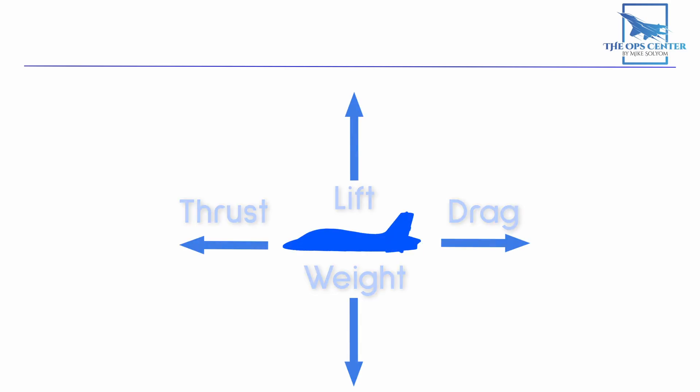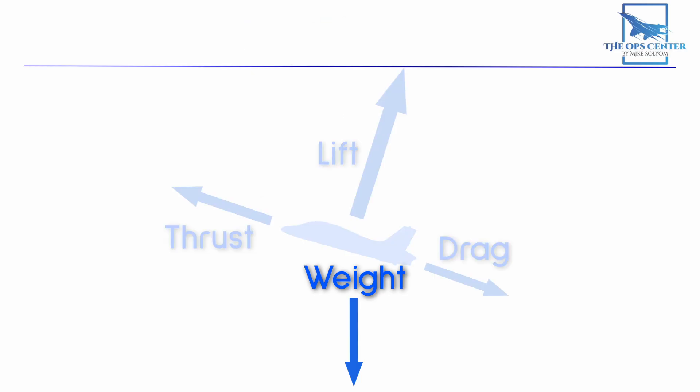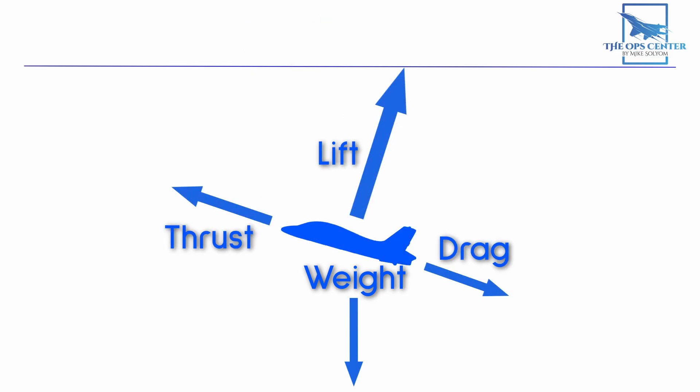This is how the four forces of flight are usually depicted, and it's a good way to explain how they interact with an aircraft flying straight and level at a constant speed — in other words, when the forces are in equilibrium. For the aircraft to climb or descend, the forces need to be out of equilibrium. So in a climb, they would look more like this.